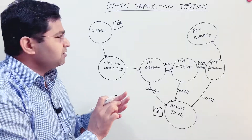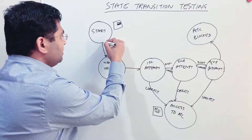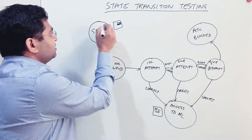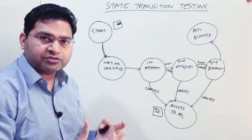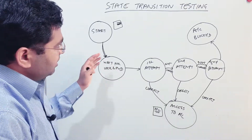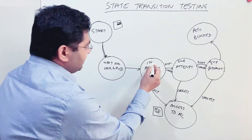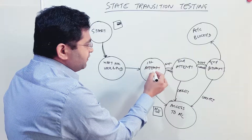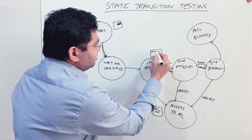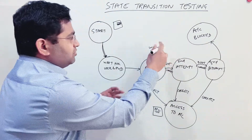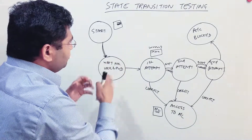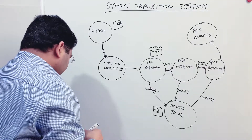When you click on the login link, that event results in a transition — this arrow — and it moves the application state from start, which is just the website, to 'waiting for username and password.' Actions are things like error messages displayed — for example, if you enter a wrong username and password in the first attempt, a message like 'wrong username and password' is displayed. That displayed message is the action.